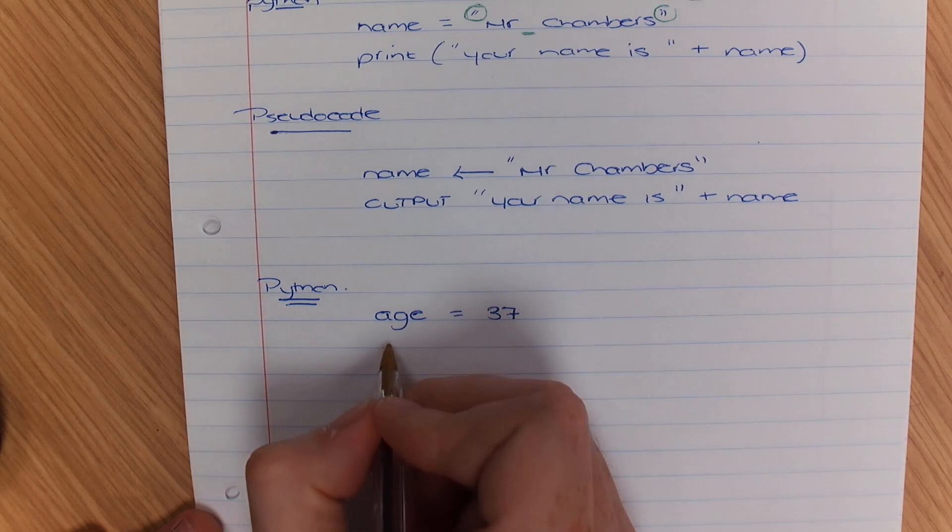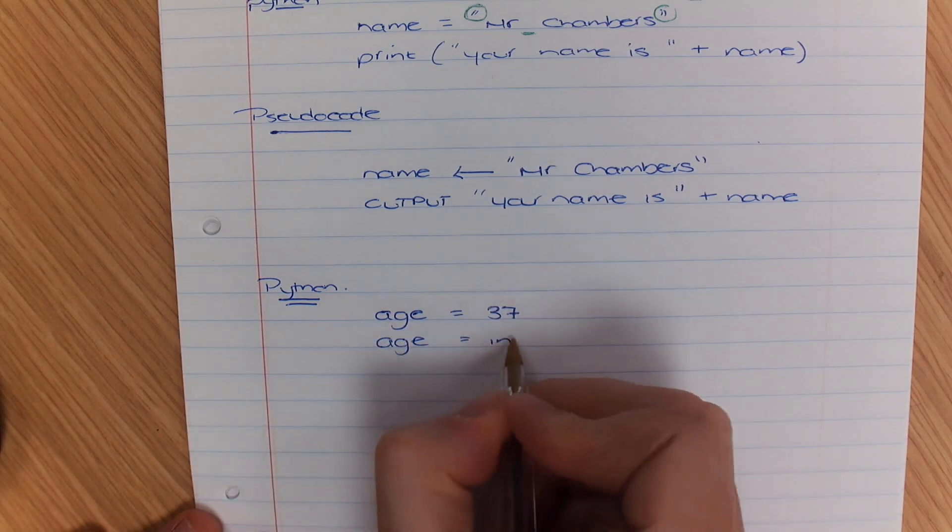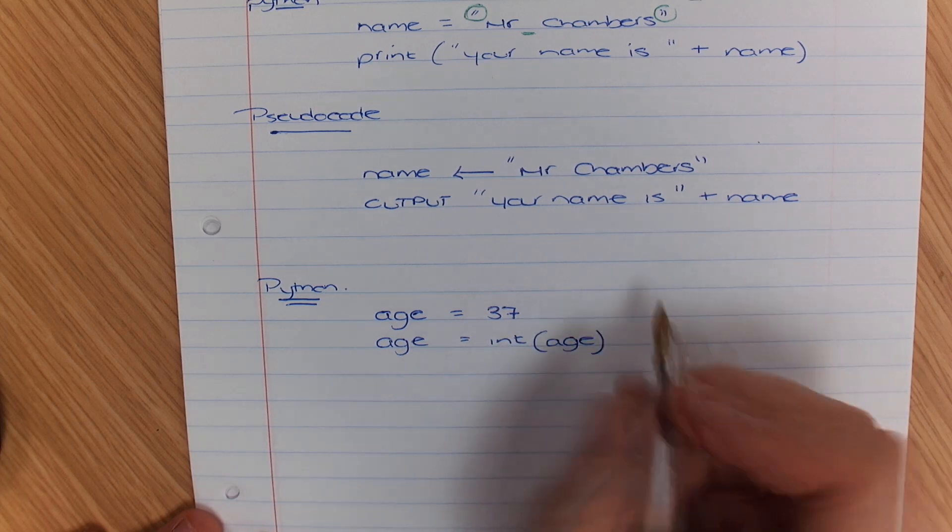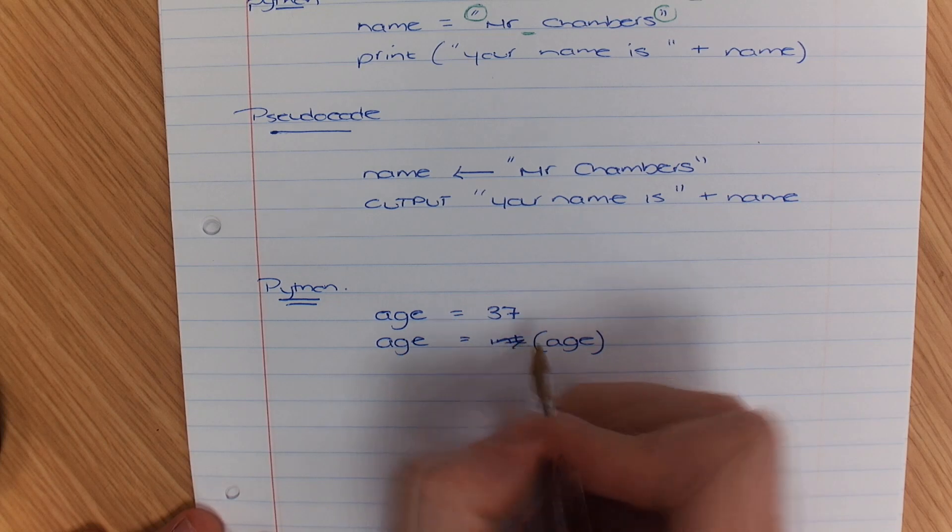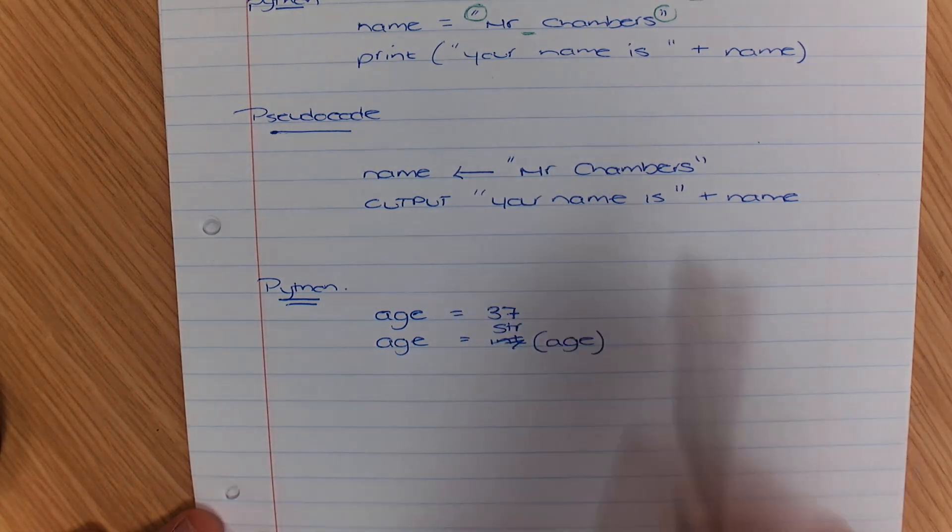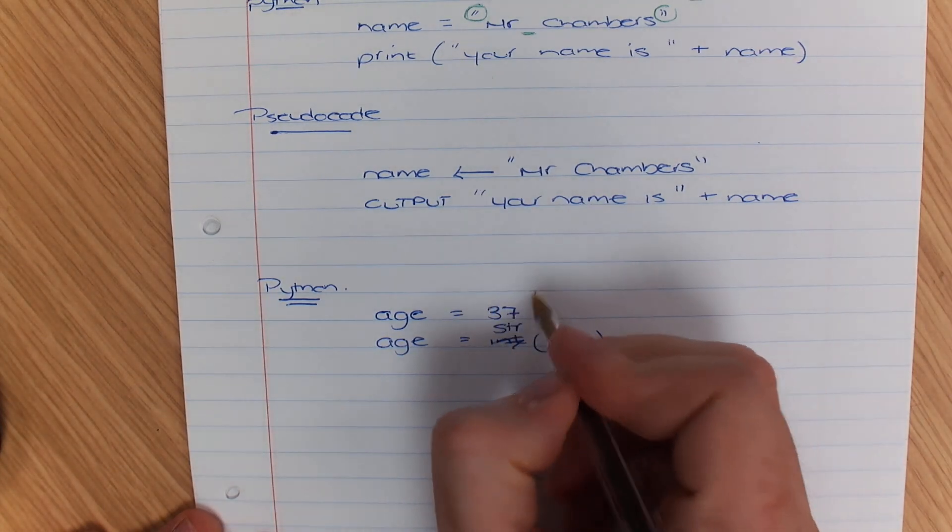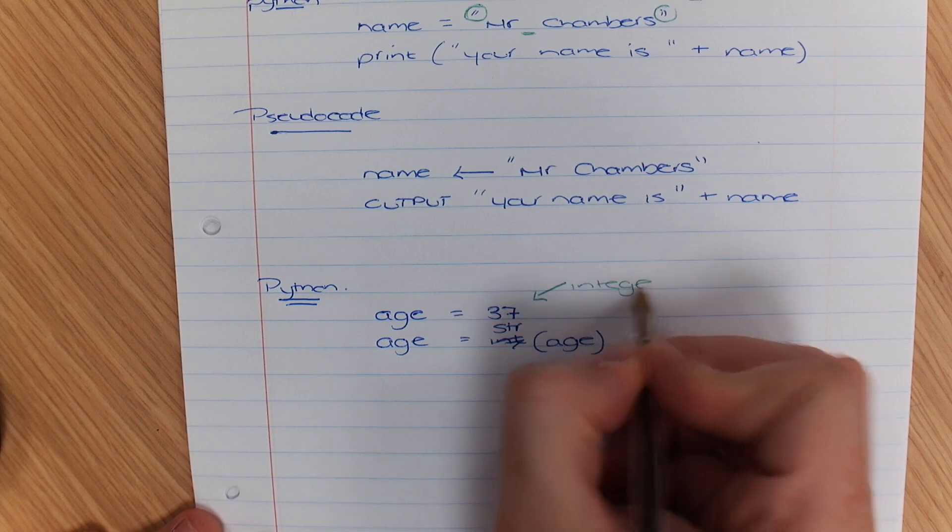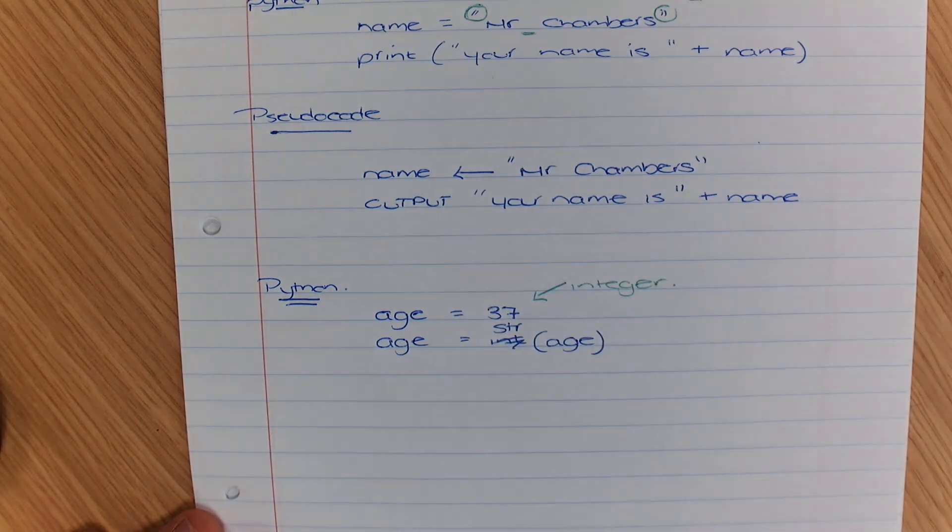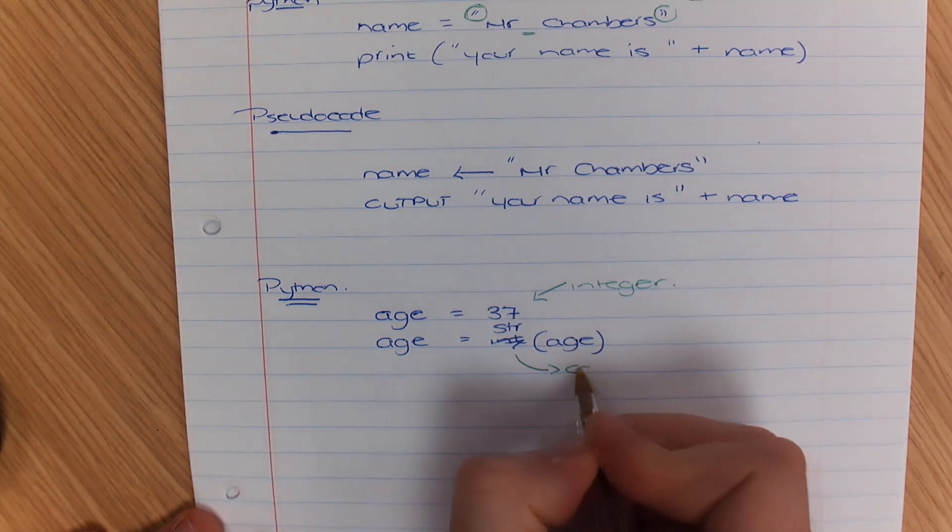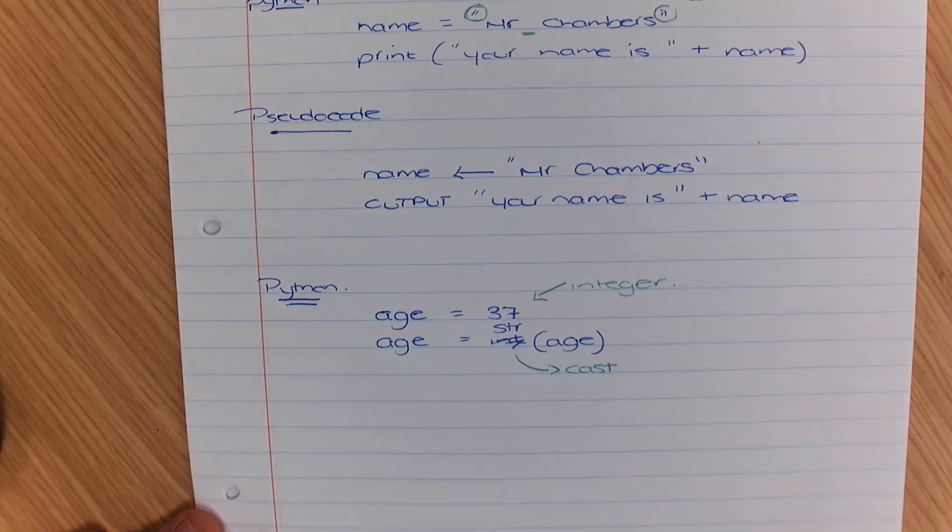Now if I want to include that in a sentence I'm going to need to cast it. So what I would need to do is age equals str, because by default because I've not got any speech marks around it this is an integer. I want to convert it to a string. So what I can do here is cast it and do the conversion.